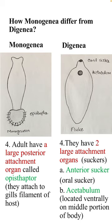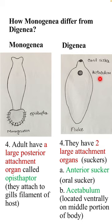Adult monogenians have a large posterior attachment organ called the opisthaptor, which they use to attach to the gill filaments of fish. Adult digenians have two large attachment organs called suckers: one is the oral or anterior sucker, and the other is the acetabulum, located ventrally on the middle portion of the body.